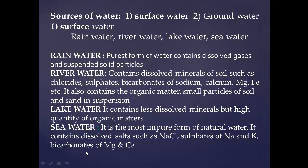Next comes river water. The rain water received flows in the form of rivers. These rivers contain dissolved minerals. As we know, water is the universal solvent, so it contains minerals — which may be chlorides, sulfates, carbonates, phosphates, or nitrates. These are salts of calcium, magnesium, sodium, iron, and potassium. River water also contains organic matter such as dead animals, dead leaves, and small particles of soil and sand present as suspended impurities.